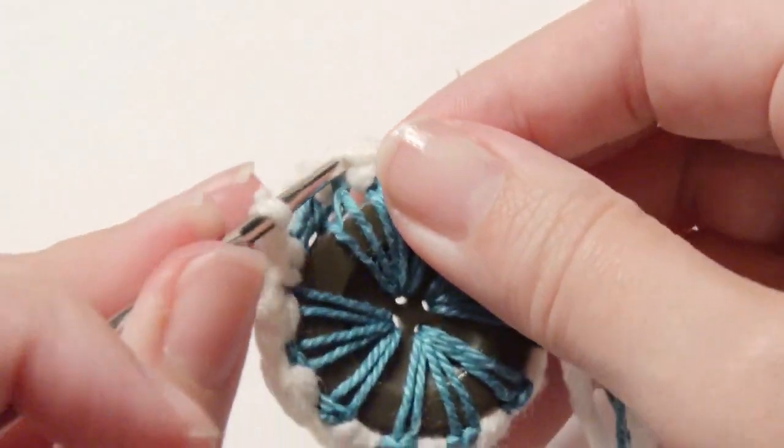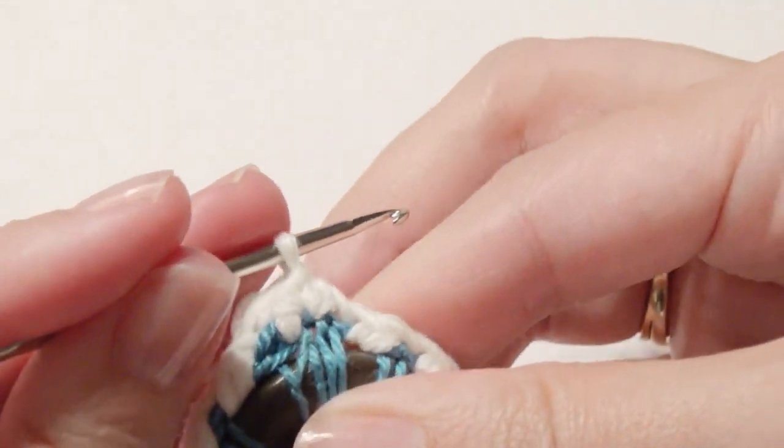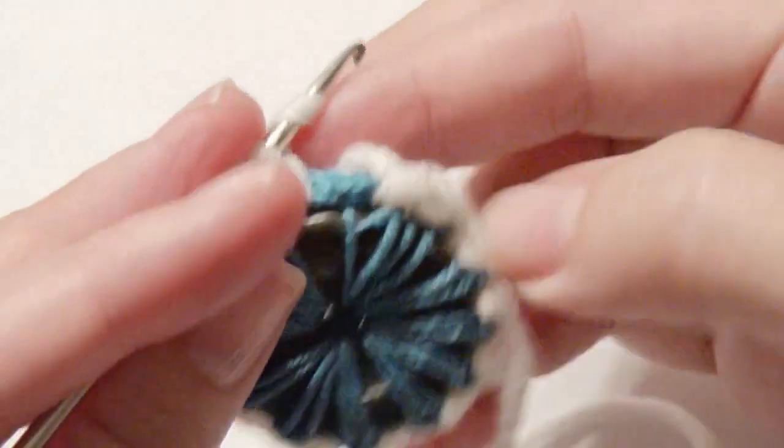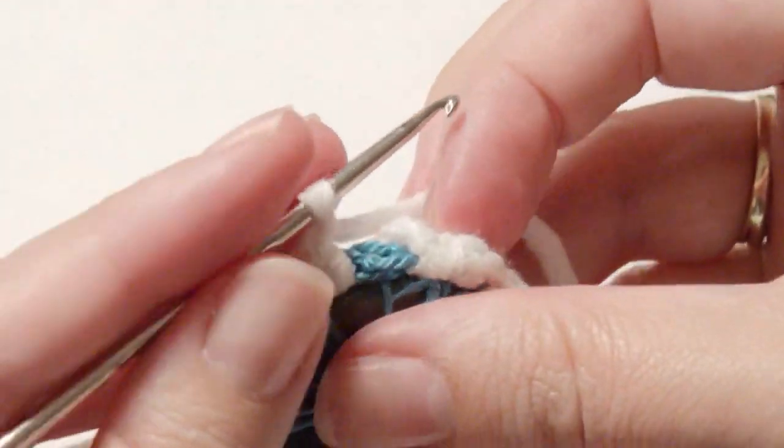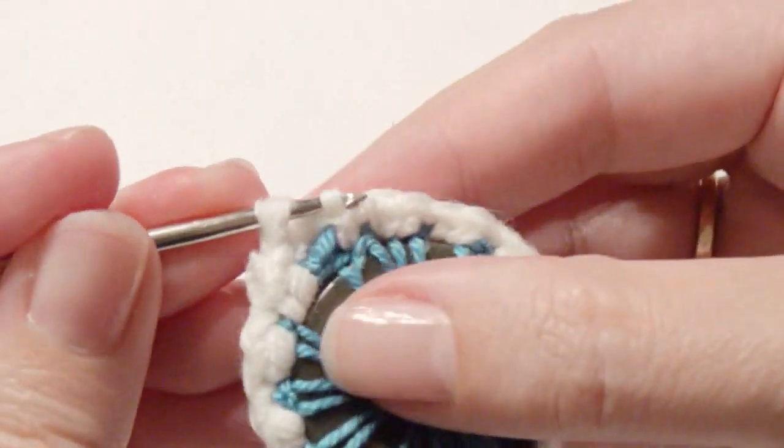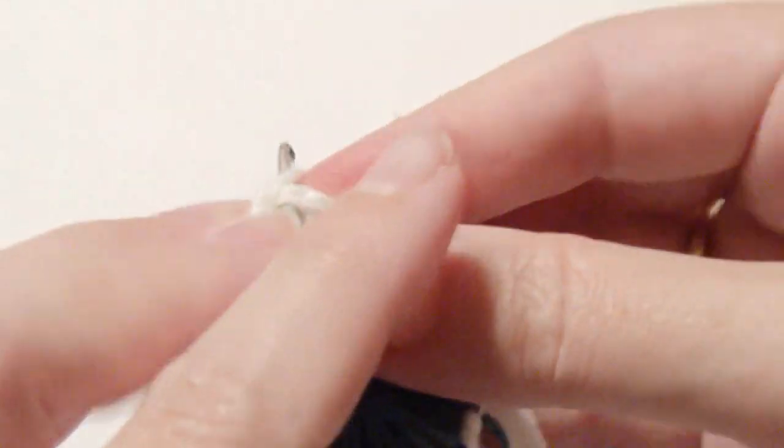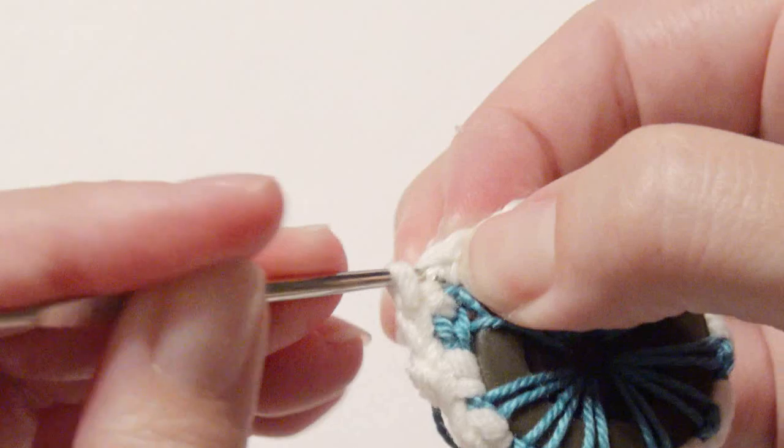I'm going to slip stitch in the beginning stitch, and then I'm going to start working the petal for the flower. Chain one and then slip stitch in the beginning stitch to finish the round. Yours may be less or more, just depending on how many stitches you did. Then slip stitch into a stitch to get started on the petal.